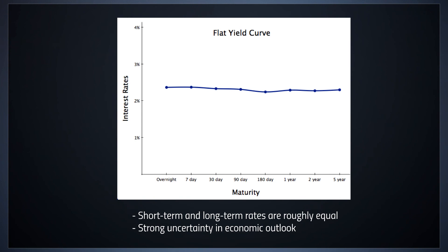We also can have a flat yield curve. This is where short-term and long-term rates are roughly equal. This reflects, as you might guess, a strong uncertainty in the future economic outlook. There might be some economic indicators that are very positive and some that are very negative, and the market's not sure which way it's going to go — whether the yield curve should be positive or negative. So we might have, in that intervening time, a flat yield curve.